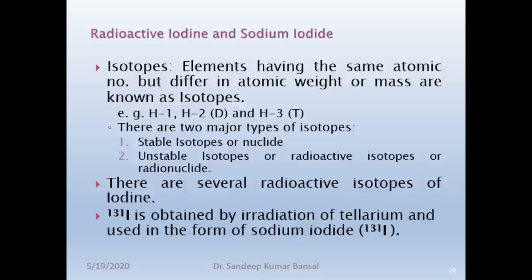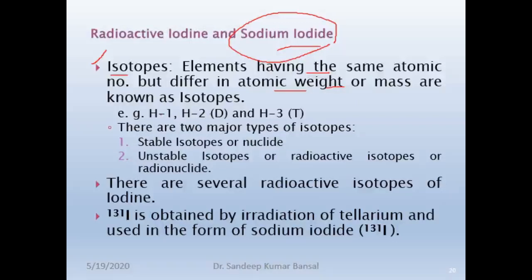The last compound to be discussed is radioactive iodine and sodium iodide — mainly radioactive sodium iodide. Before proceeding, we should recall what isotopes are. Isotopes are elements having the same atomic number but different atomic weight or mass. The example is H1, H2, and H3 — isotopes of hydrogen known as hydrogen, deuterium, and tritium. There are two types of isotopes: stable isotopes and unstable isotopes. Unstable isotopes exhibit radioactive phenomena.